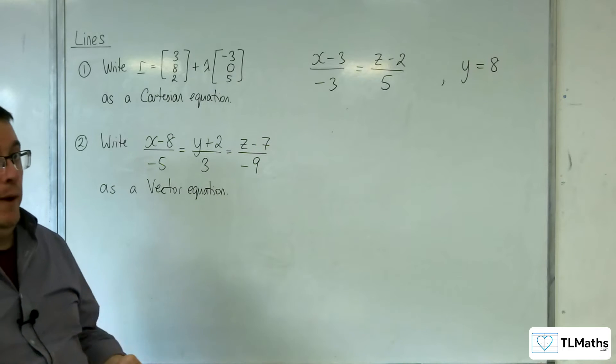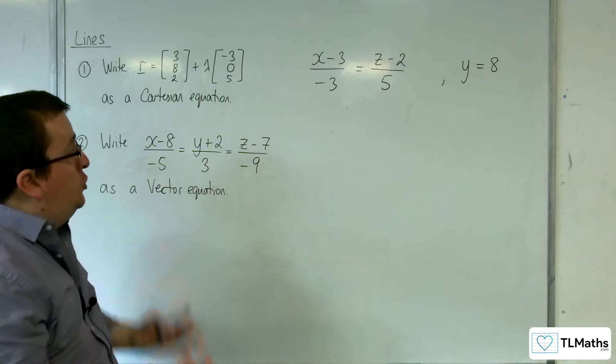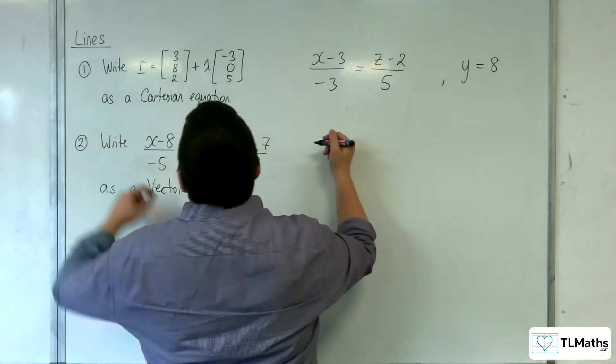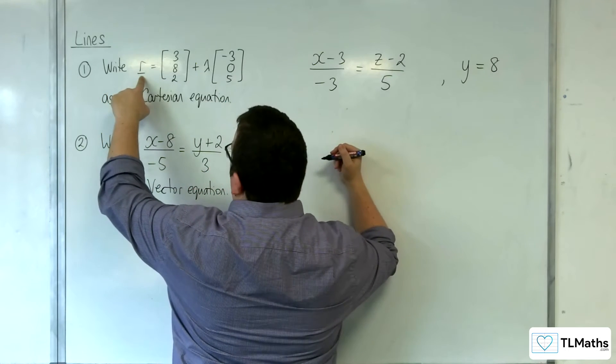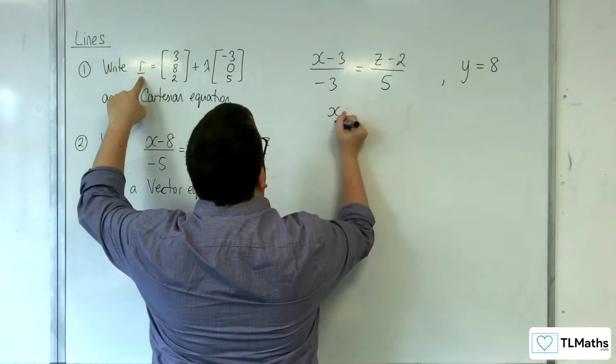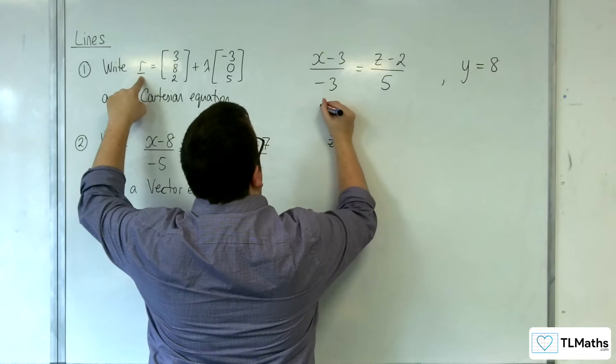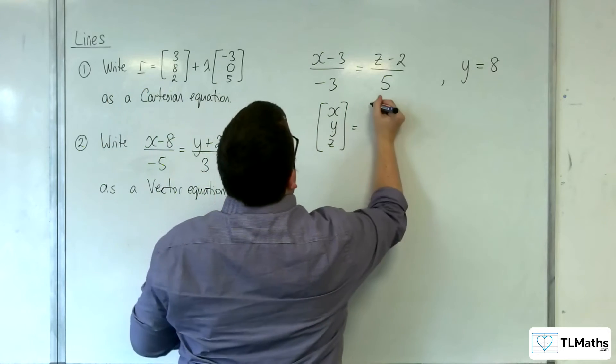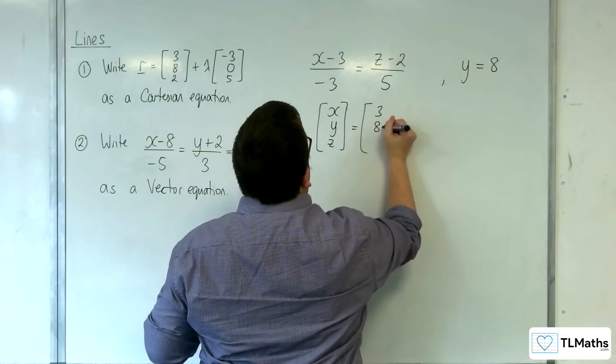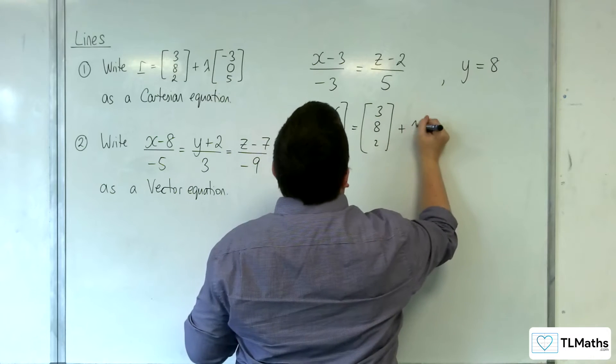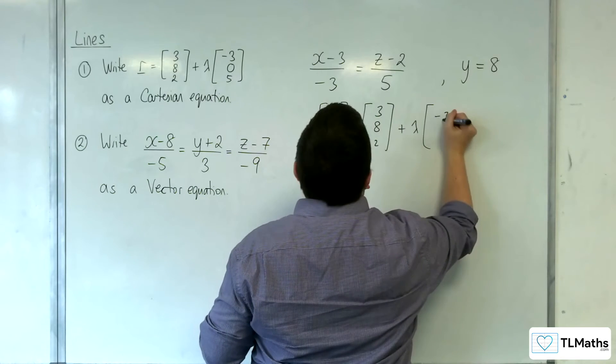If you wanted to show that you got that, then the way to do that was to write r as xyz. And that's equal to your 3, 8, 2 plus lambda lots of minus 3, 0, 5.